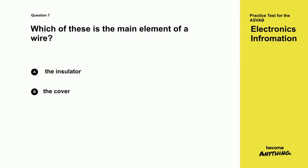Question 7. Which of these is the main element of a wire? A. The insulator. B. The cover. C. The shield. D. The conductor.